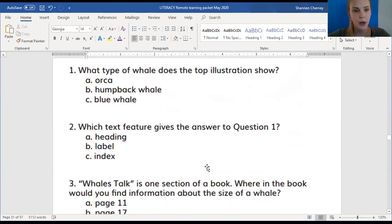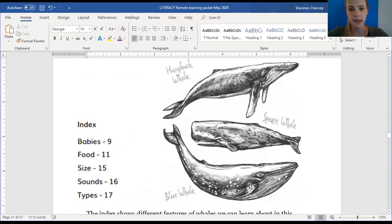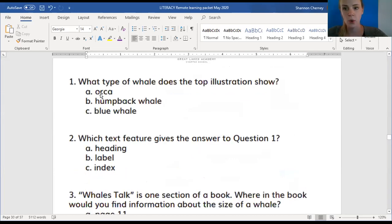Your packet, I think, says seahorses right here. This word should be whales. It shows the page numbers where we can find certain kinds of information. The author includes the index so we know which pages have which kinds of information. So this is telling me that I might be able to find information on baby whales on page 9 or sounds that whales make on page 16. So, now that we've taken a look at our information and text, let's dive into our questions. Question number one, what type of whale does the top illustration show? Let's read that two times. What type of whale does the top illustration show? Orca, humpback whale, or blue whale? Well, let's go find our top illustration. It's not this one, that's the bottom, it's this one at the top. Take a look at what kind of whale this is.